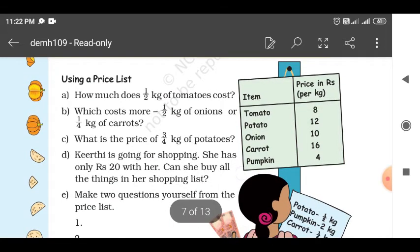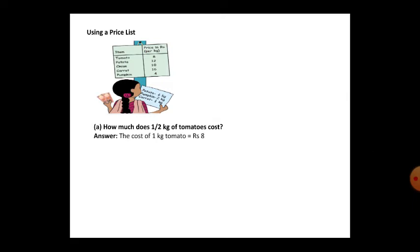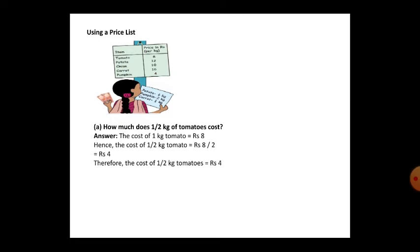Using a price list: how much does half kg of tomato cost? The items and prices are given and questions are asked. The cost of one kg of tomato is 8 rupees. For half kg, you divide by two: 8 by 2 equals 4 rupees. So the cost of half kg of tomato is 4 rupees.